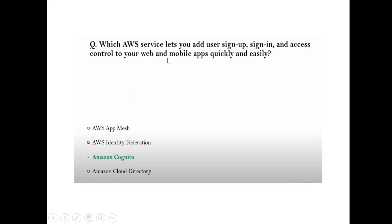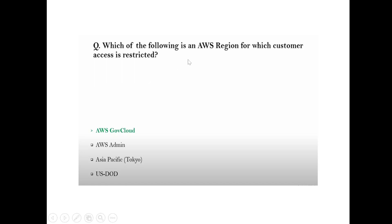Question: Which AWS service lets you add user sign-in, sign-up, and access control to your web and mobile apps quickly and easily? Answer: Amazon Cognito. Question: Which AWS region restricts customer access? Answer: the Government Cloud — no customer access is given there.